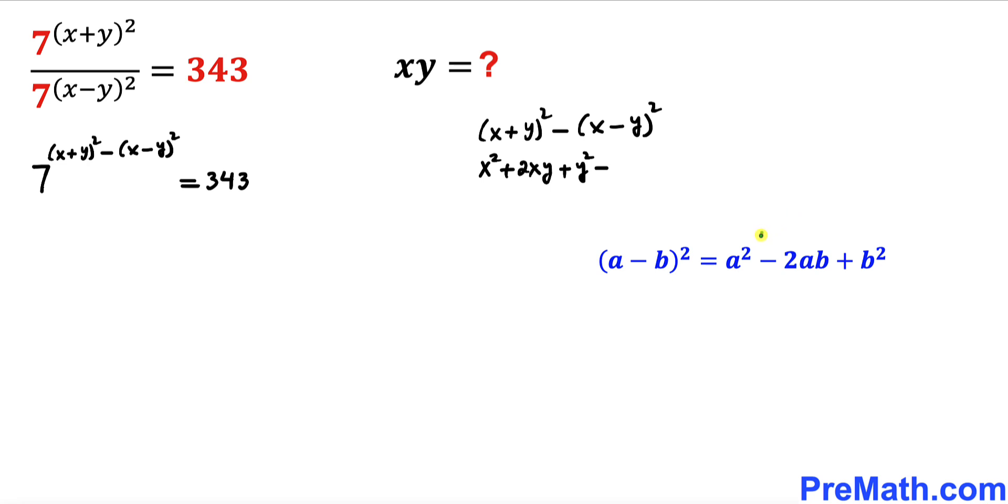And now let's recall another identity: (a-b)² could be written as a² - 2ab + b². I'm going to apply it on this binomial now. So I'm going to put a parenthesis and write down x² - 2xy + y².